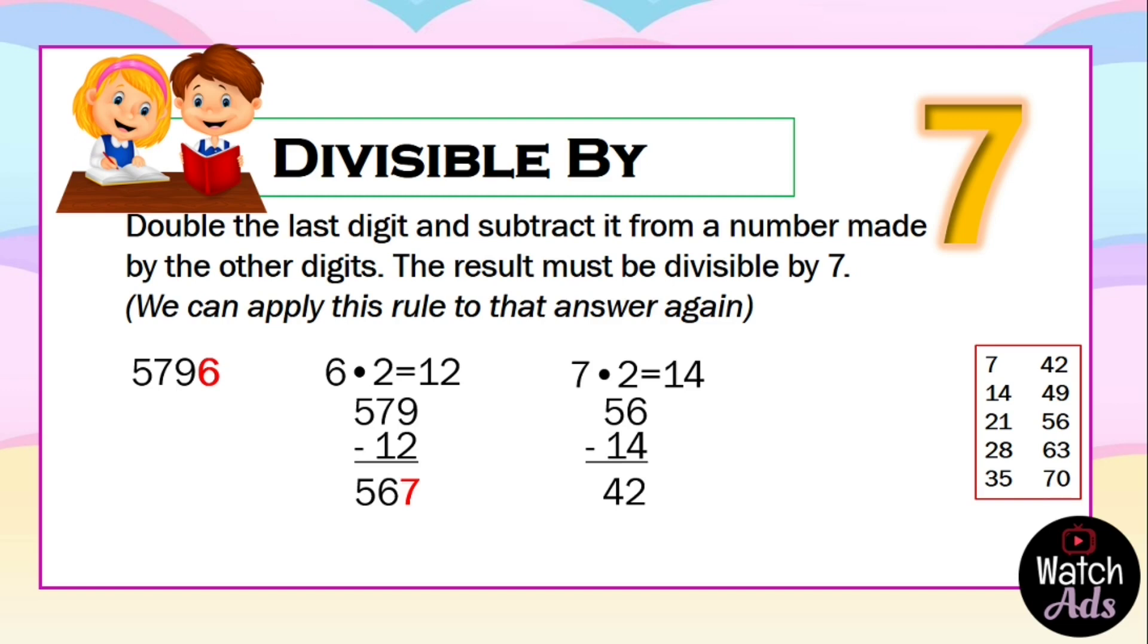Now, we know that 42 is divisible by 7, which means that 5796 is divisible by 7.